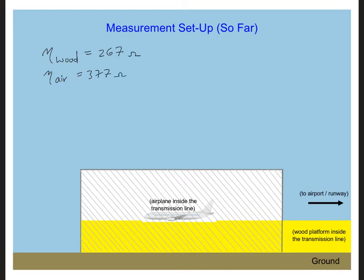we can calculate the reflection coefficient for wood is minus 0.17. So about 17% of the wave, the electromagnetic wave, will reflect off of the wood.